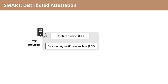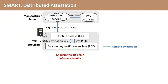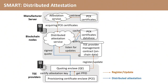We use TEE hardware to endorse the integrity and correctness of the off-chain model inference. To prove the validity of TEE hardware, we need to use the remote attestation service provided by trusted TEE manufacturers. To avoid relying on the centralized remote attestation server provided by TEE manufacturers, we use blockchain nodes to design a distributed attestation service to mitigate the single point of failure.